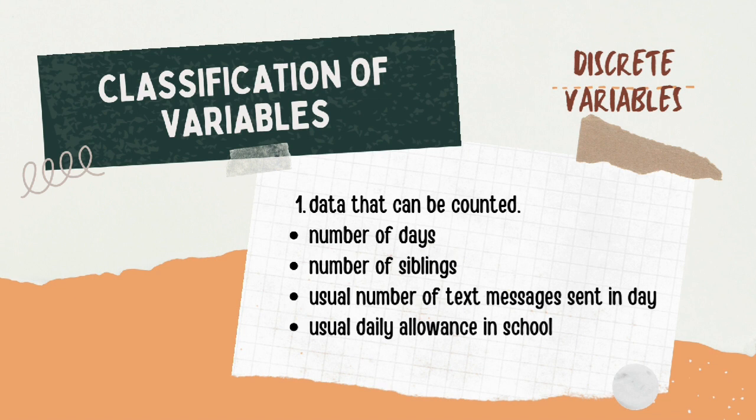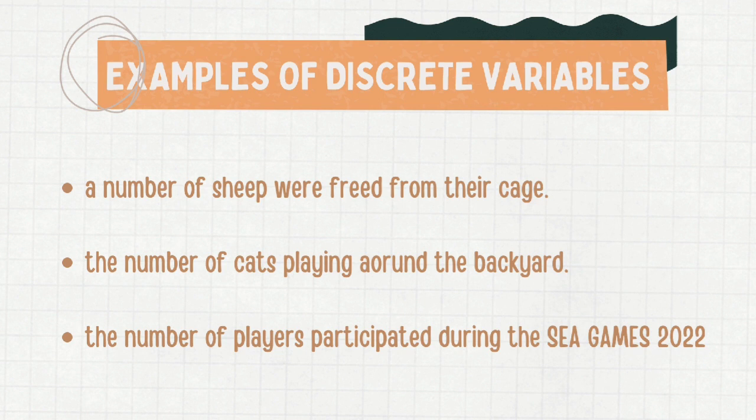Next, we have discrete variables — data that can be counted. For example, number of days, siblings, usual number of text messages sent in a day, and usual daily allowance in school. Here are some examples of discrete variables.